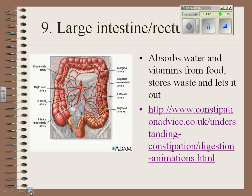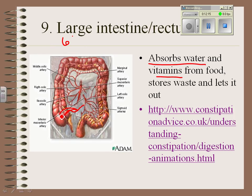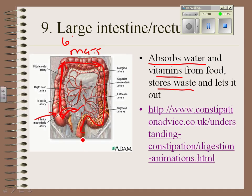The large intestine is called large not because it's long — it's only 6 feet long — but because of its width. By the time food passes out of the small intestine into the large intestine, it's no longer really food; most of the nutrients have been removed. The job of the large intestine is to absorb water and vitamins. Food sits there for a while, then the large intestine does a mass movement — peristalsis all at once — moving waste up the ascending colon, across the transverse colon, down the descending colon, through the sigmoid colon, and into the rectum for storage.